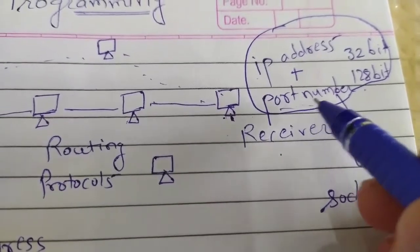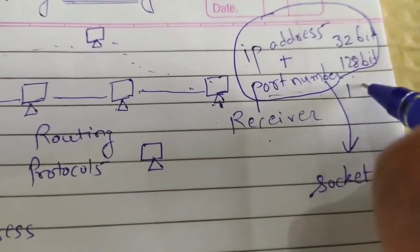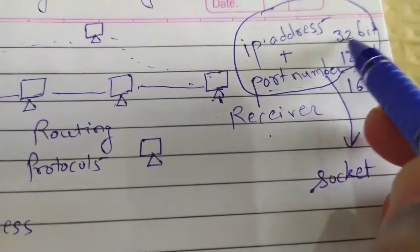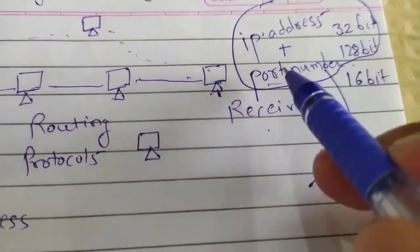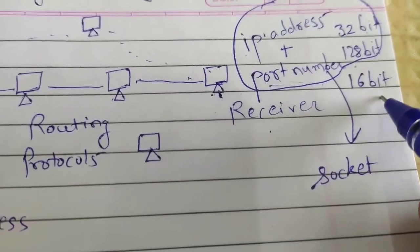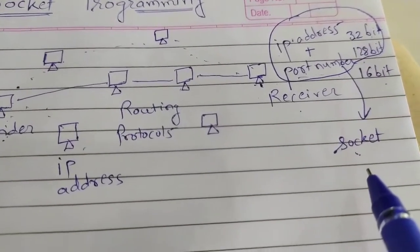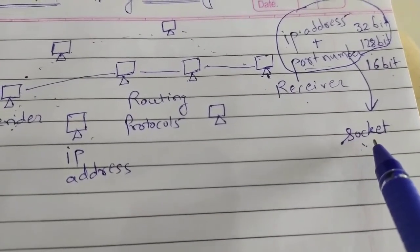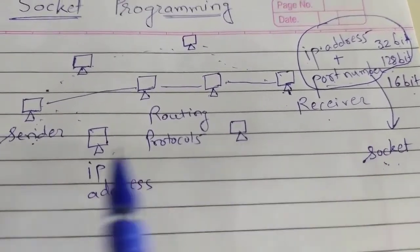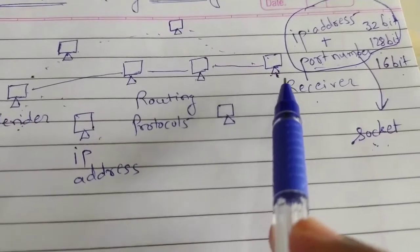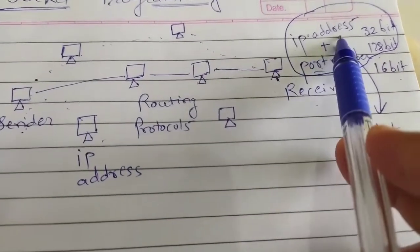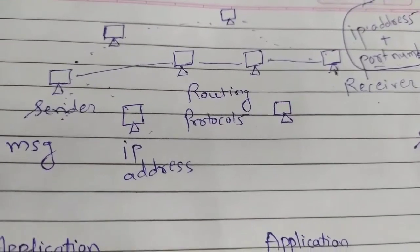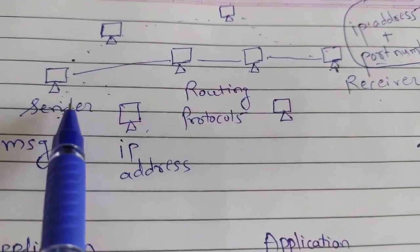The port number is 16 bits, just like IP address can be 32 bits or 128 bits. So if you want to define a socket: a socket is an endpoint which is used for sending or receiving, and it is the combination of IP address and port number, used when a message is sent from sender to receiver.